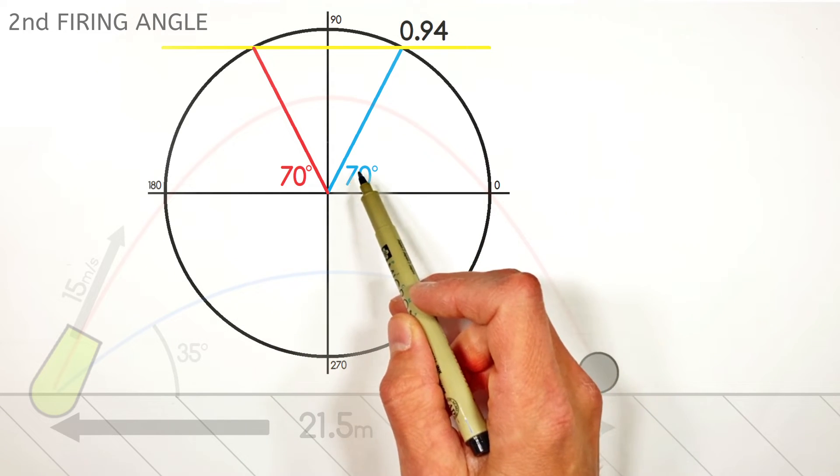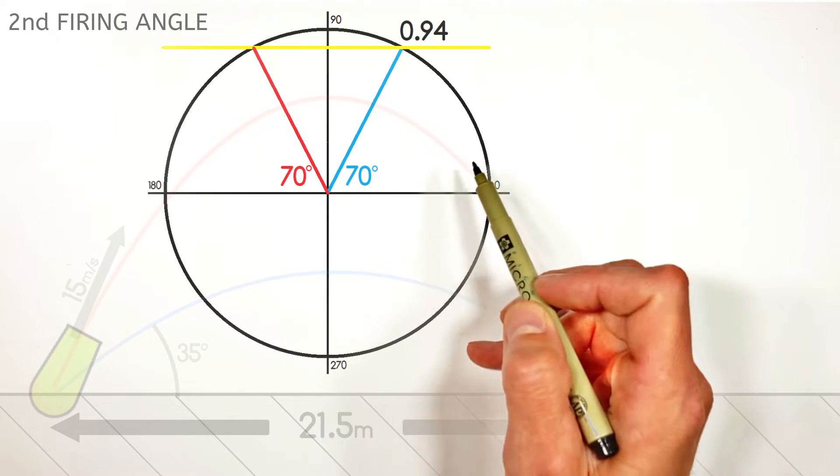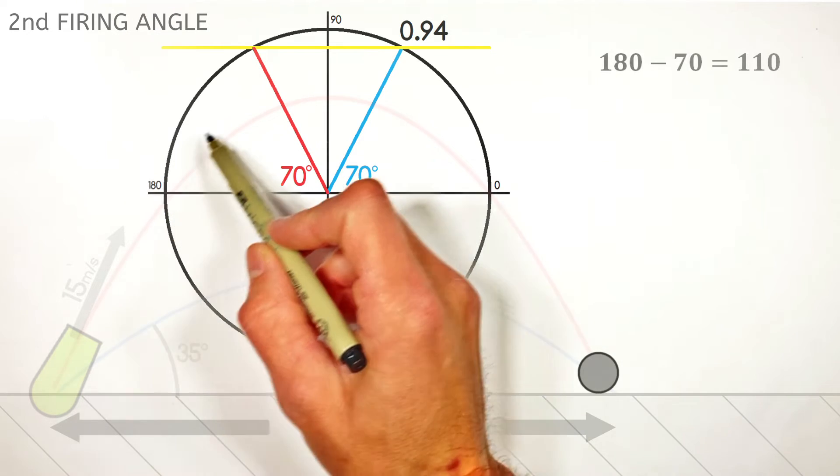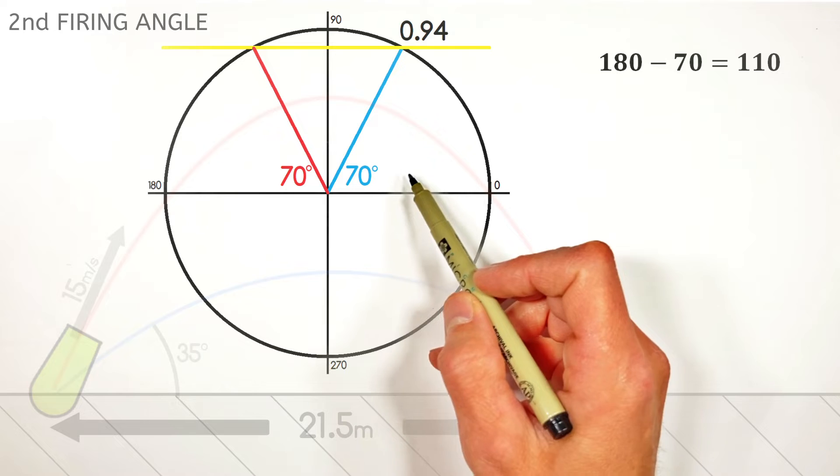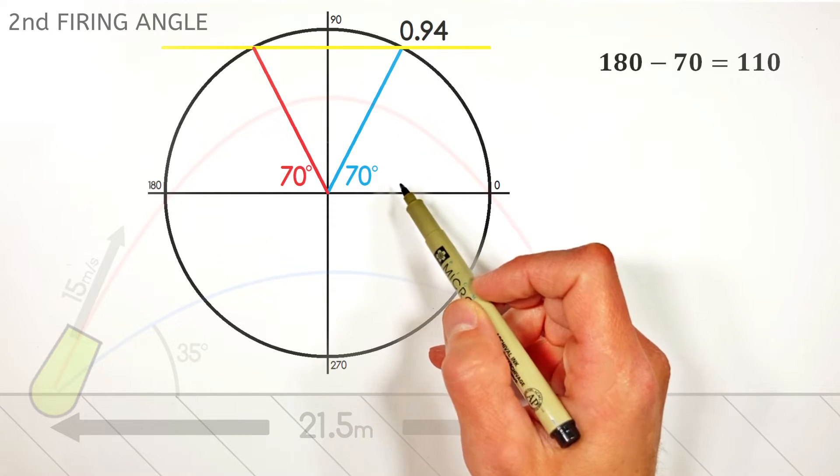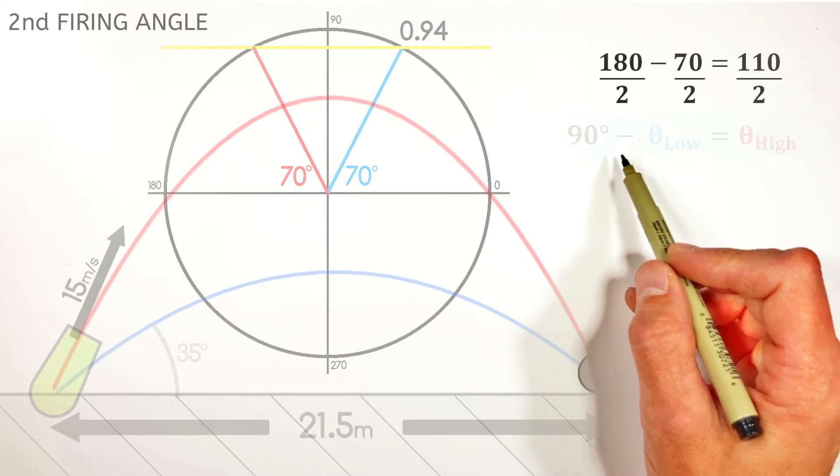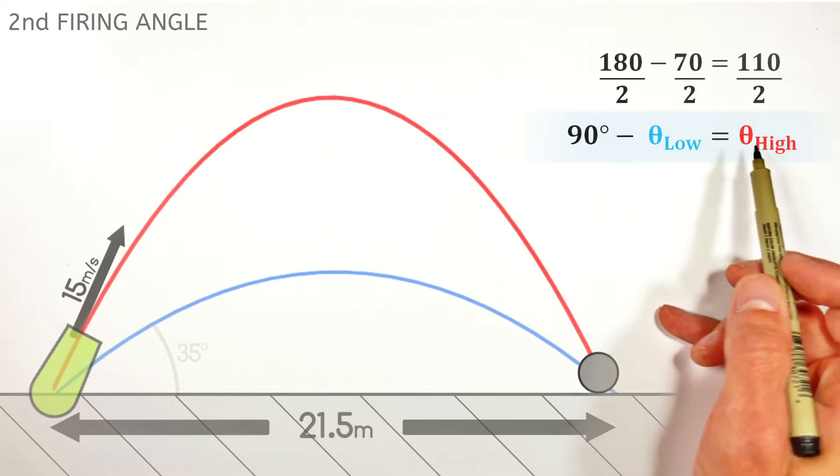Or looking at the obtuse angle from the positive x-axis, as we normally measure angles, that's going to be 180 minus 70, or 110 degrees. And ultimately, what this means is we can solve for the second firing angle simply by subtracting our first firing angle from 90 degrees.